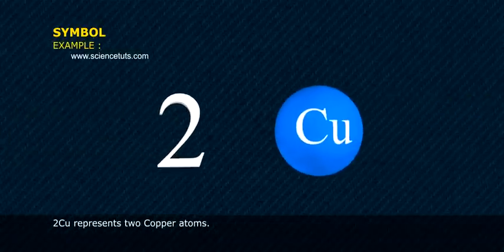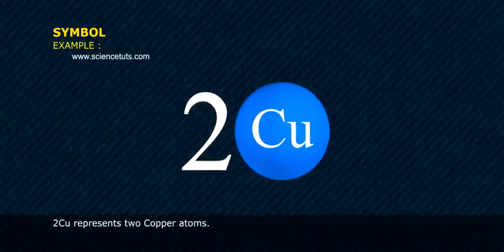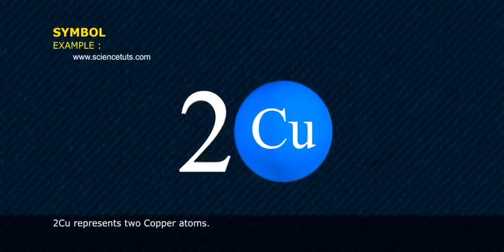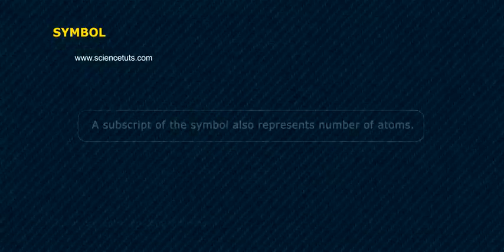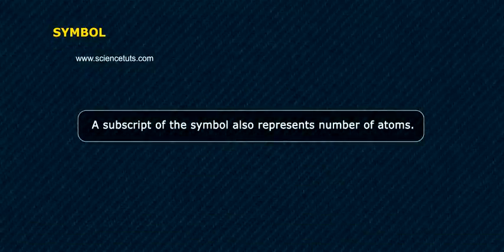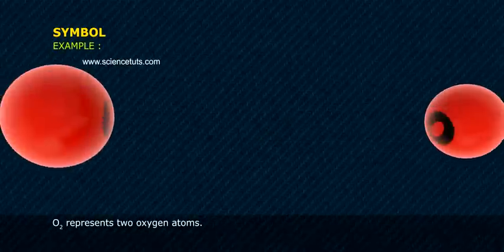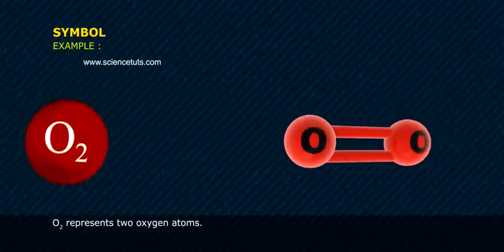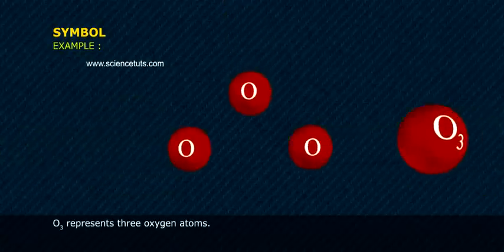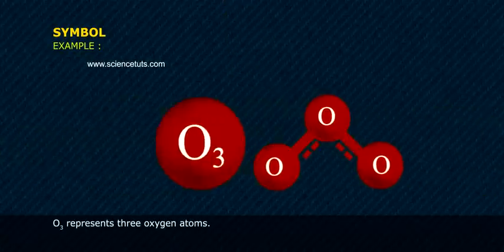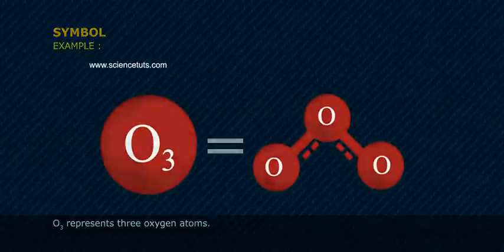Example: 2Cu represents 2 copper atoms. A subscript of the symbol also represents the number of atoms. Example: O2 represents 2 oxygen atoms; O3 represents 3 oxygen atoms.